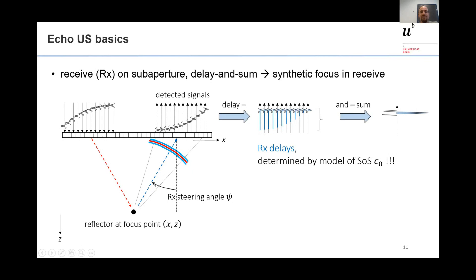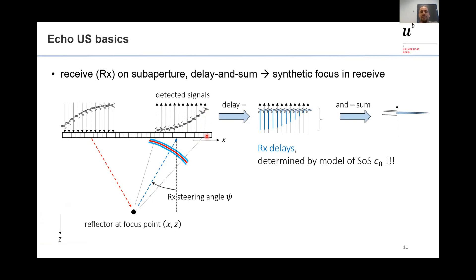A sub-aperture of the array detects on each piezoelectric element individually a voltage signal. Whereas we use physical focusing on transmit, on reception we just acquire the signals and do the focusing in software. All signals are delayed relative to each other so that a signal coming from the focus will line up in time across the different elements, and then the sum is performed. This is the famous delay-and-sum algorithm. The received delays are also calculated based on the assumed speed of sound C0.